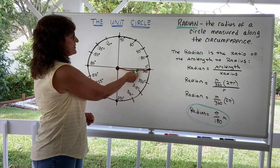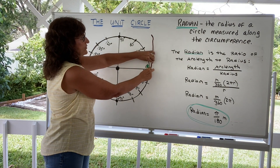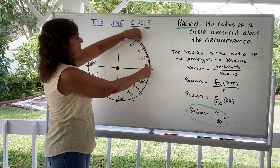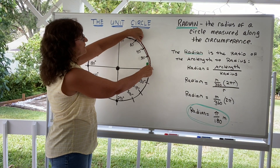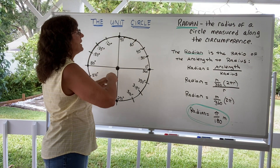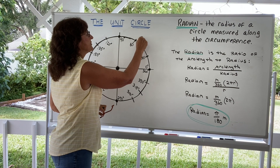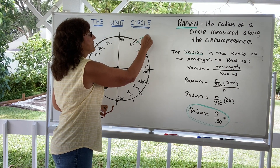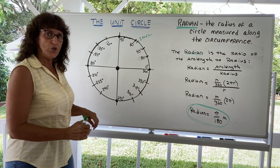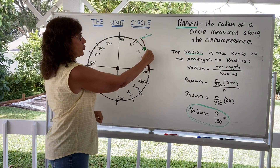So here's the radius. Starting at zero degrees, I'm going to move this radius along the circumference. I'm using this pipe cleaner because it's flexible. And you can see that one radian comes to about right here. So right here is where one radian is — let me mark that. You take the radius and measure it along the circumference, and there's one radian.